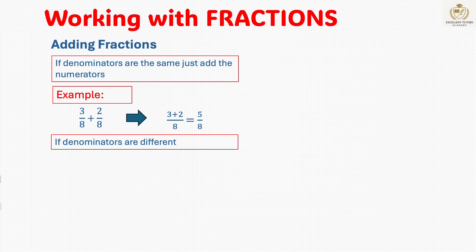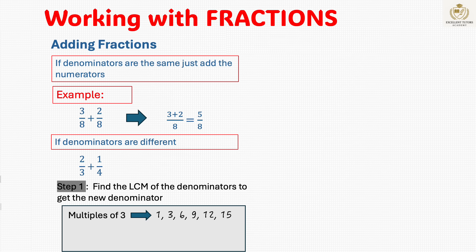But when the denominators are different, follow the steps below. For example, 2 over 3 plus 1 over 4. Step 1: Find the LCM of the denominators to get the new denominator. The LCM of 3 and 4 is 12.